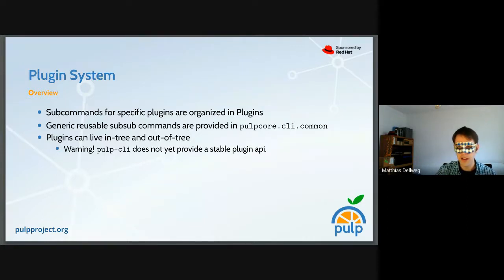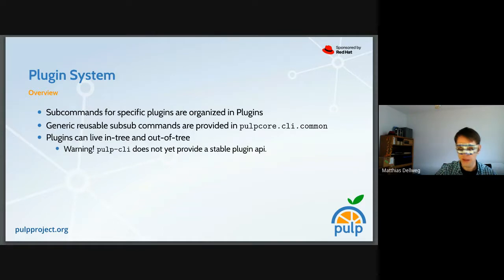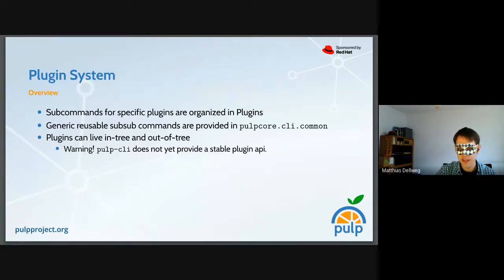At this point there are two or three plugins living outside the main tree: the Debian plugin in a very early stage, the OS tree plugin which got some important PRs merged recently, and one for Erminik which just lives in my personal space because I used it for testing the tasking system — so that's a very specific one.